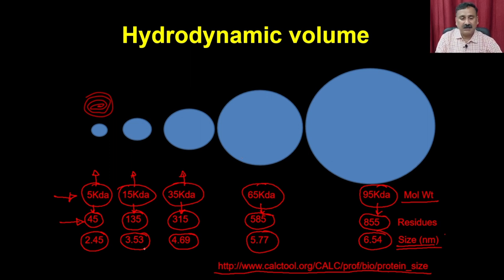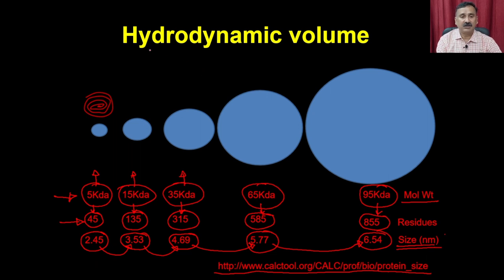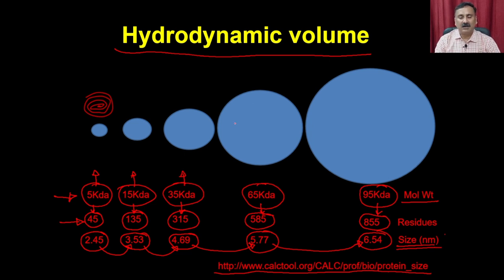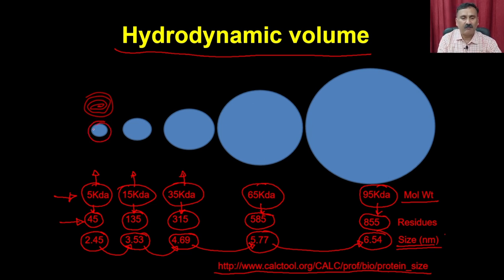The size is not proportional — it's not that 5 kDa versus 15 kDa means the size is 3 times. It will increase in a particular ratio. That is how you can exploit this feature in chromatography, called gel filtration chromatography, because as size increases, it increases the hydrodynamic volume, and that is exploited. Since this ball is very different from that ball, they can be separated using gel filtration chromatography.